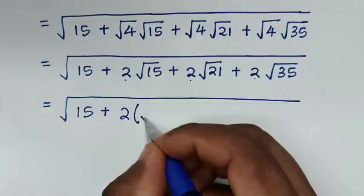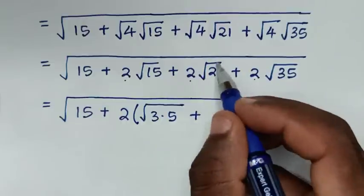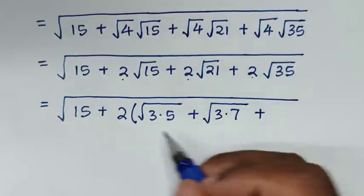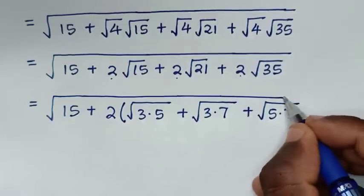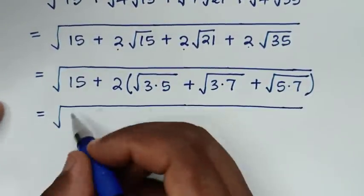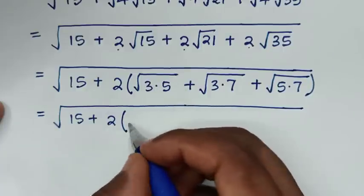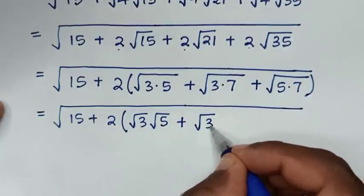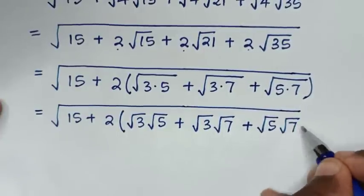We note that square root of 15 is the same as square root of 3 times 5, and square root of 21 is square root of 3 times 7, and square root of 35 is square root of 5 times 7. So in the next step it will be equal to: square root of 15 plus 2 times — square root of 3 times square root of 5, plus square root of 3 times square root of 7, plus square root of 5 times square root of 7 — in brackets.